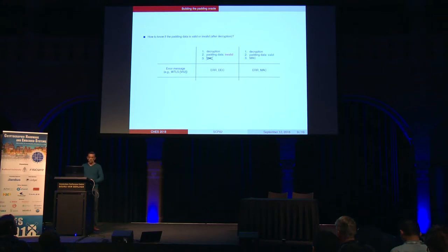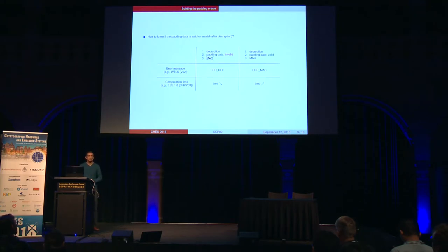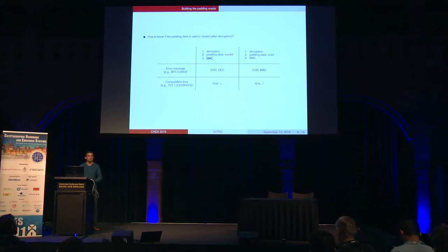There may also be another possibility. In the first case, when the card, after decryption, does not find valid padding data, it may not be able to compute the MAC tag. In the other case, the card can decrypt, find valid padding data, and then proceed to MAC verification. Therefore, the computation time in either case is different, and this can also be used by the attacker — if it is able to obtain this timing information — to mount the padding oracle attack.